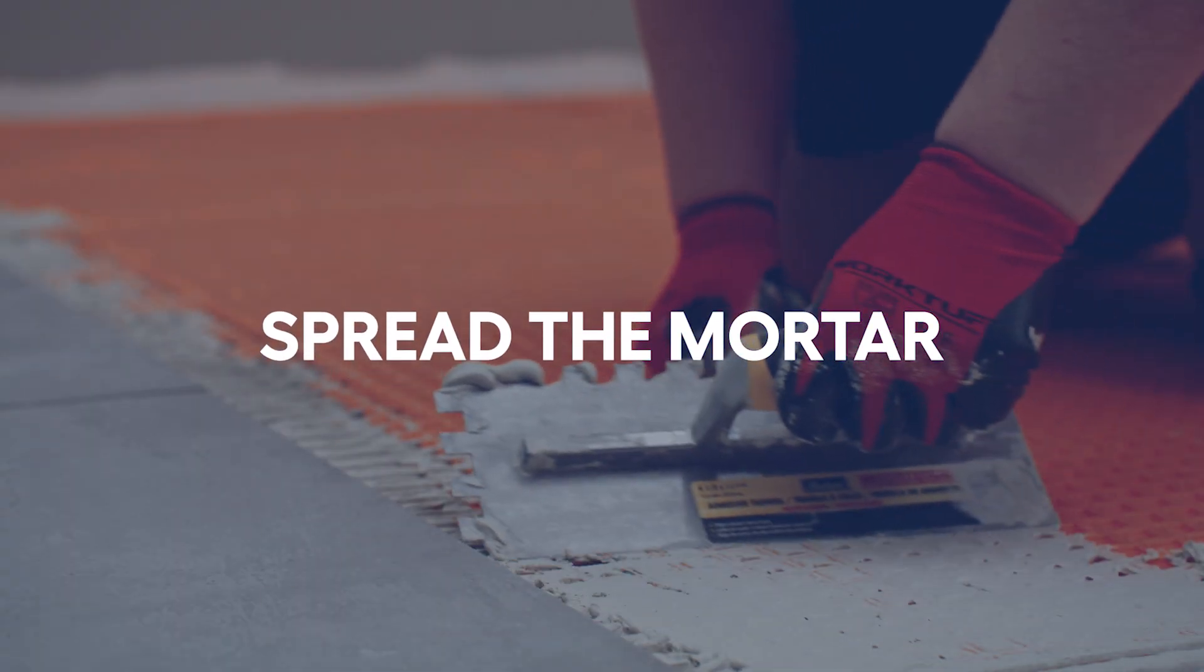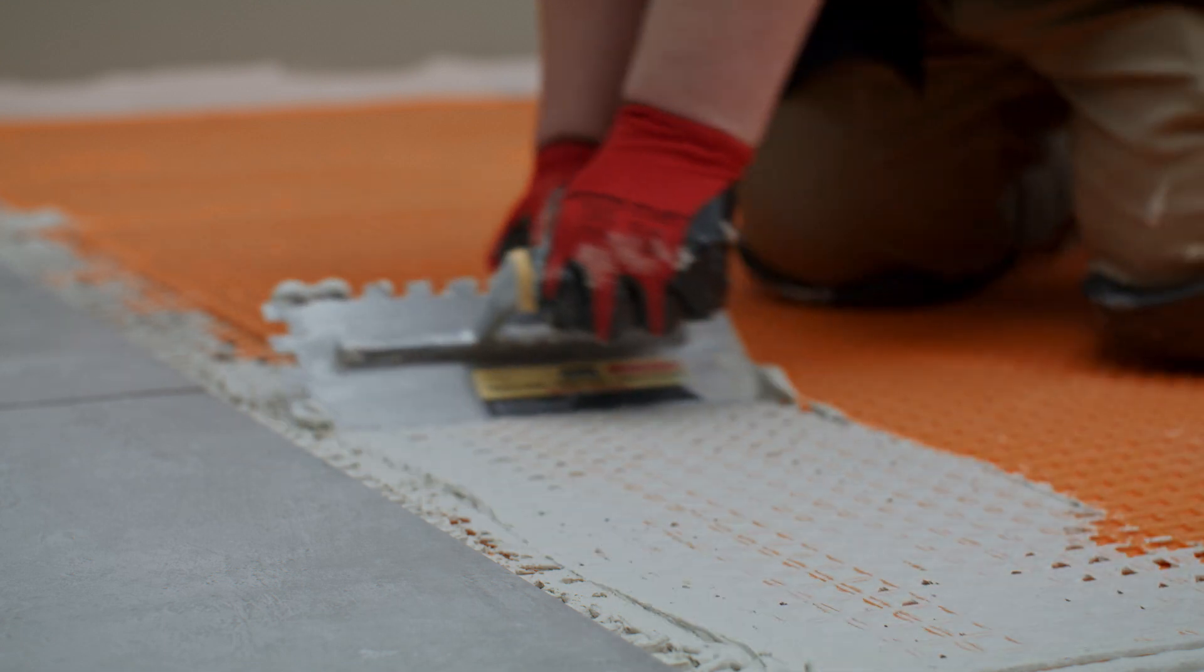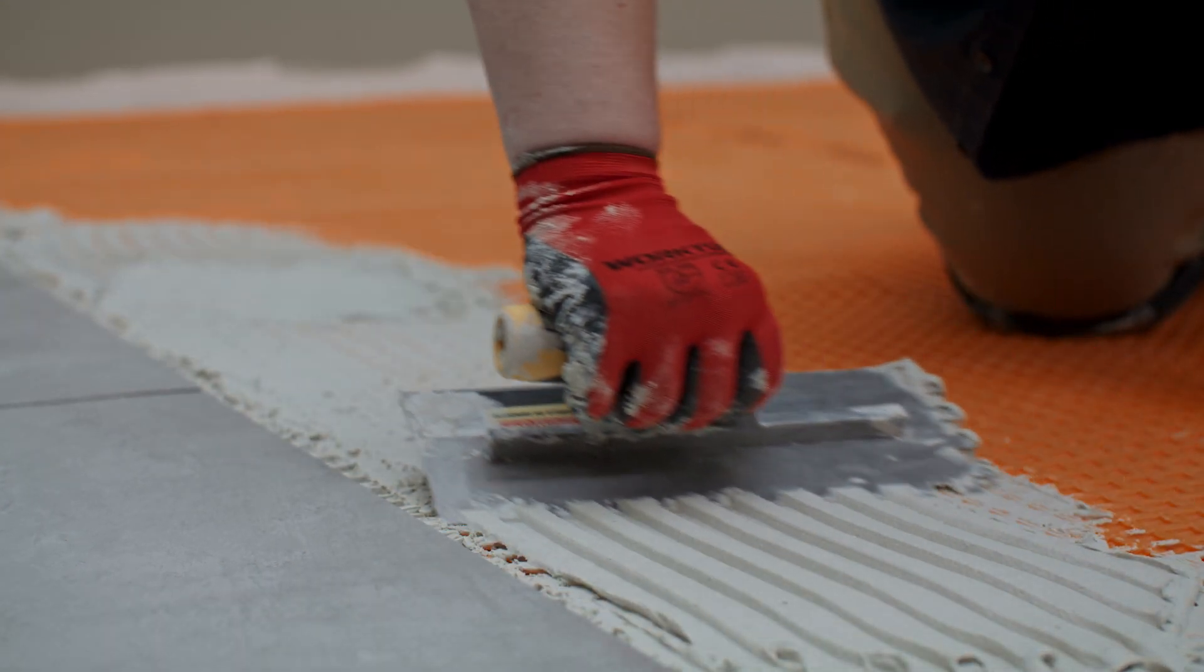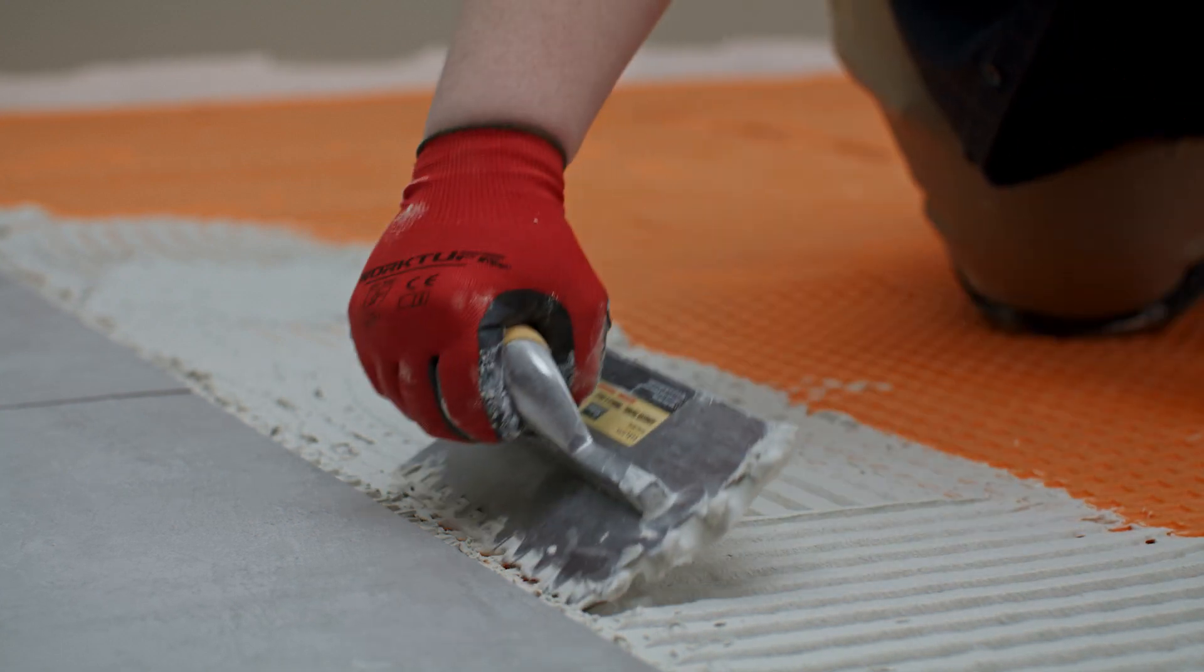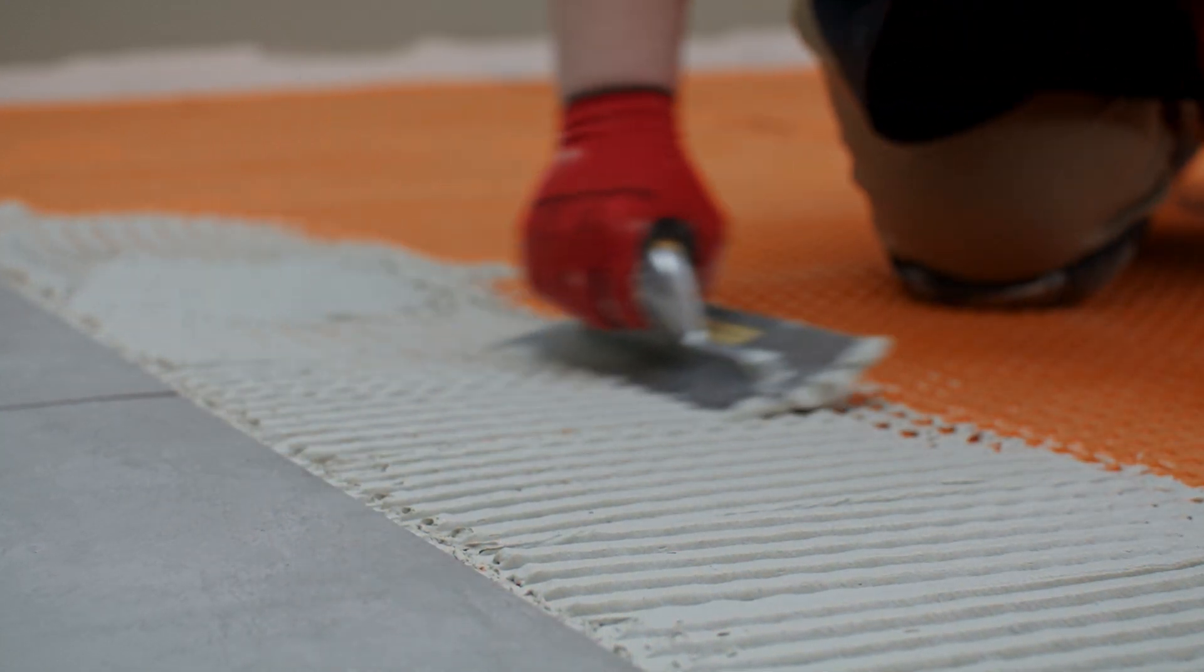First, we'll go in with our mortar. Spread it along the layout lines. You'll want to lay down enough mortar to cover the space of about two to three tiles at a time. Then, use the notched edge of a trowel to rake through the mortar to create ridges. Your trowel lines should all be in the same direction.